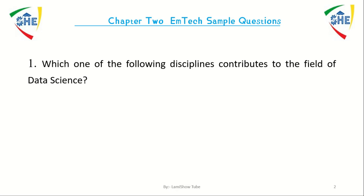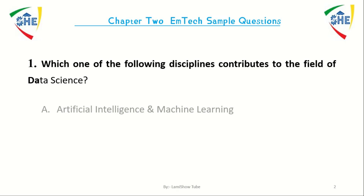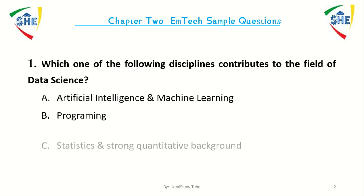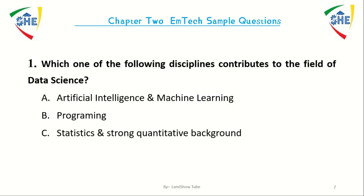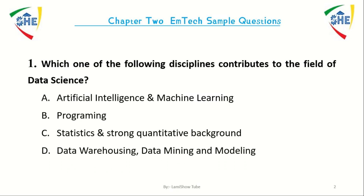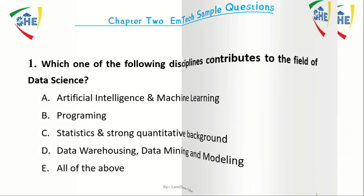Question number 1: Which one of the following disciplines contributes to the field of data science? A) Artificial intelligence and machine learning, B) Programming language, C) Statistics and strong quantitative background, D) Data browsing, data mining and modeling. Answer: E) All of the above.